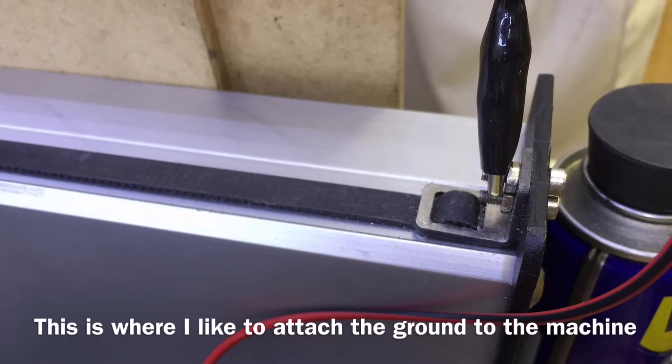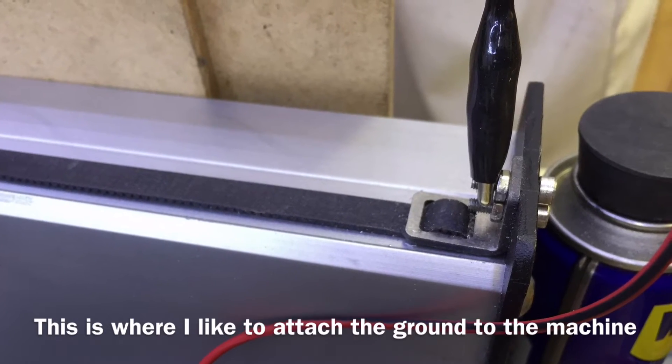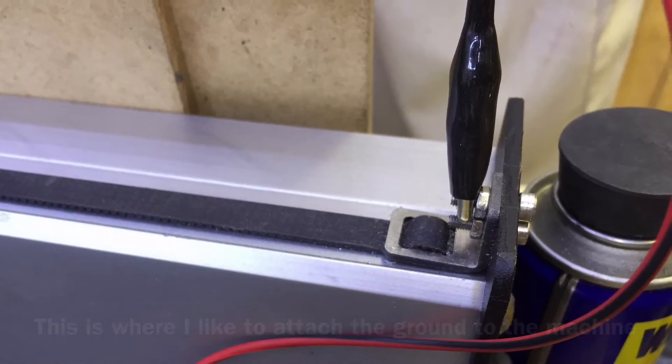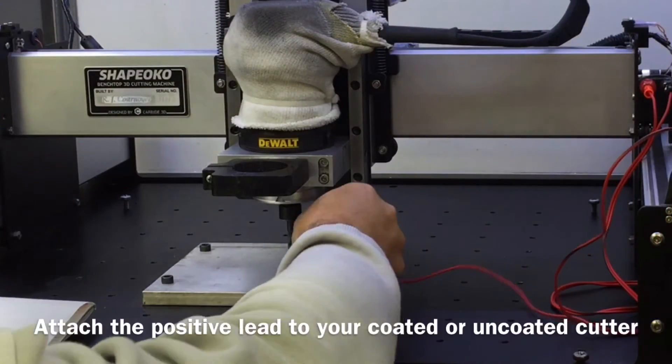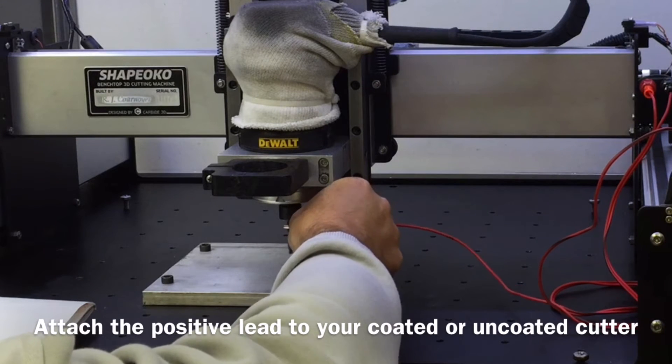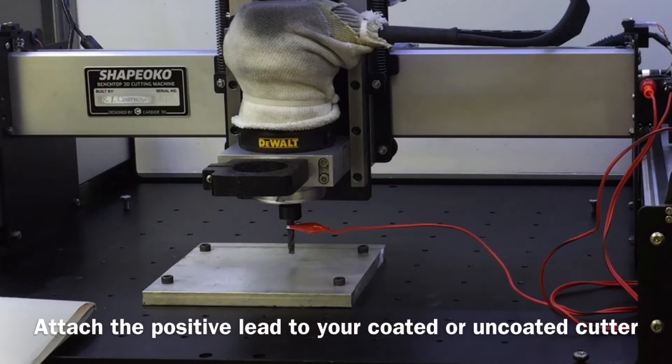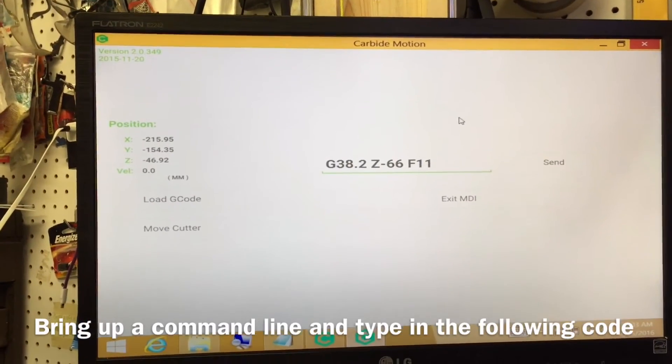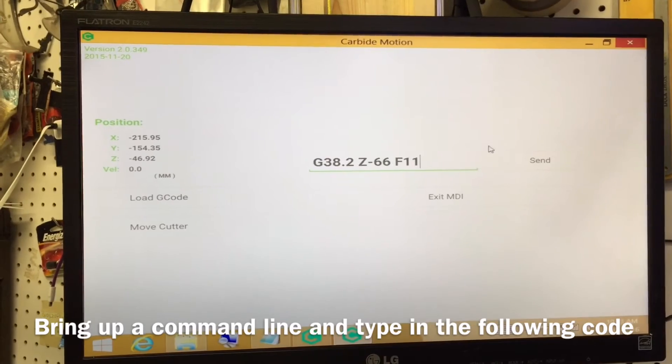Now since I have the metal table, I attach my ground to the belt tightener in the front right-hand corner. Then the second probe—the positive probe—just goes to the cutter. Doesn't matter if it's coated or uncoated. It also doesn't matter if you reverse the leads. It's just proximity.